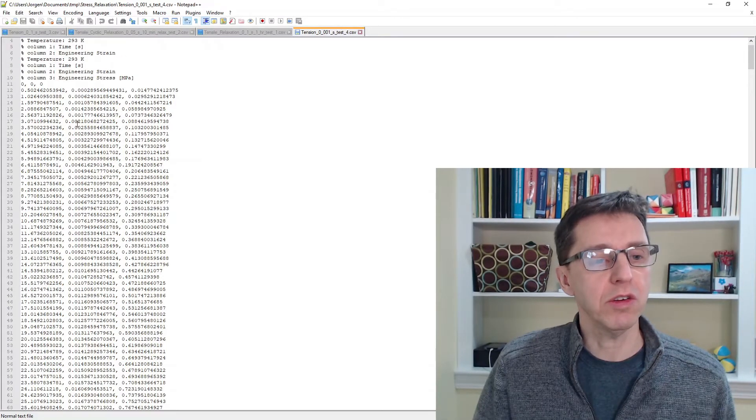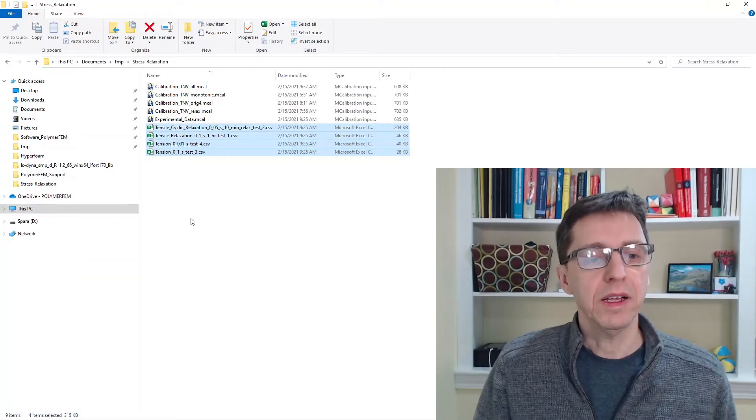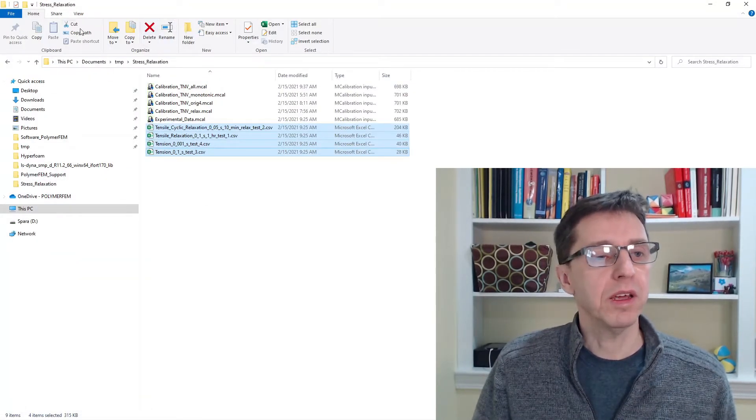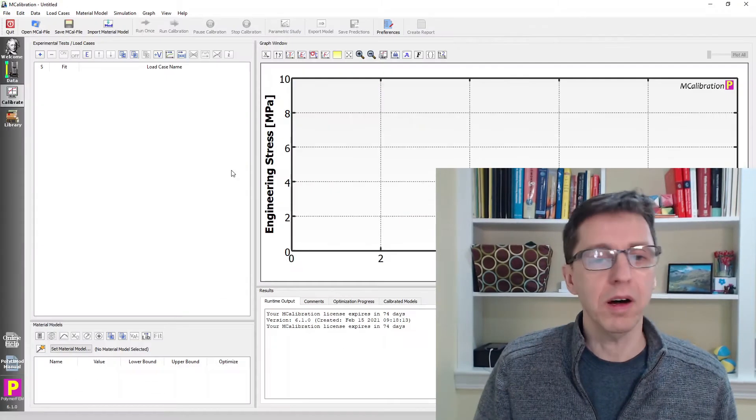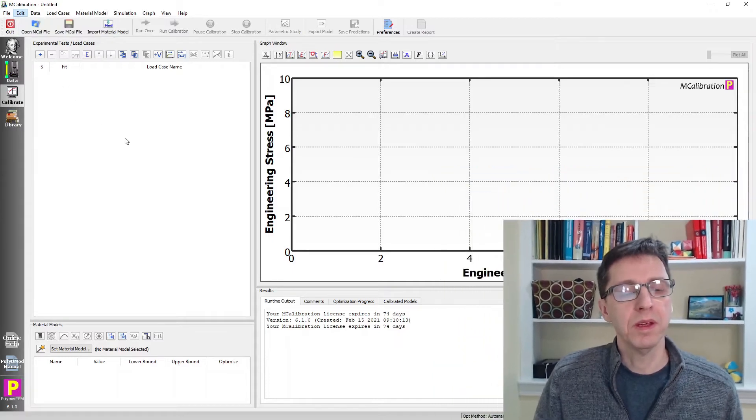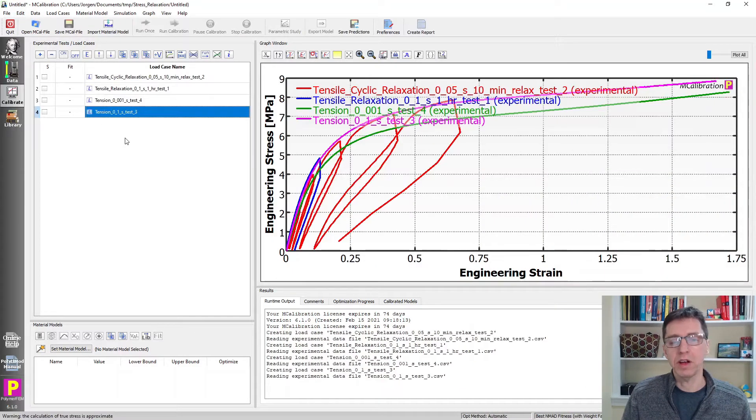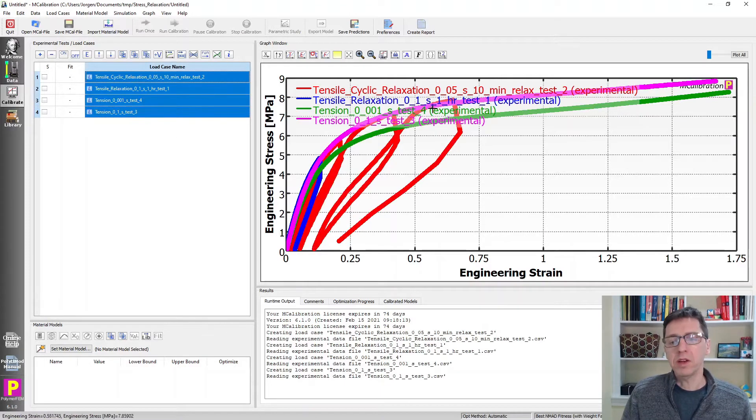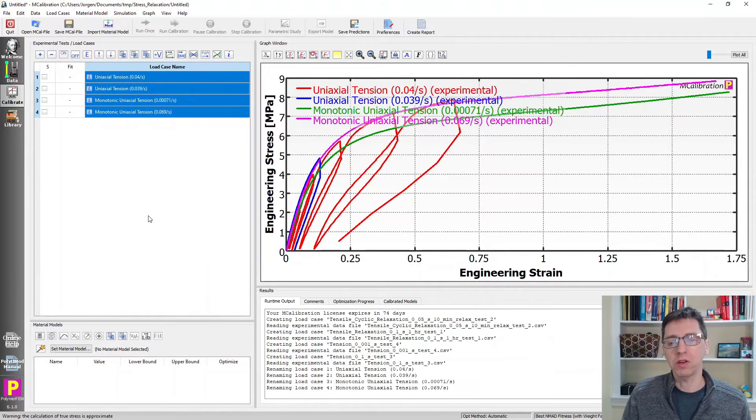Time, engineering strain, engineering stress in these different files. I'm going to copy these by clicking on copy, open a new window of MCalibration, and paste in these files. Instead of having these long complicated names, I'm going to right-click and rename load cases based on type.